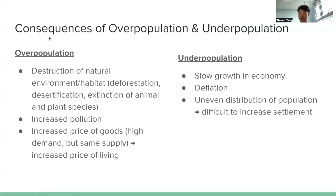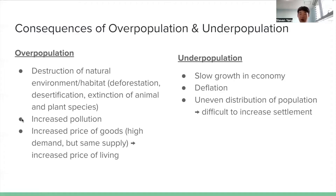Both having too high or too low a population have repercussions. The consequences of overpopulation include destruction of the natural environment and habitat of wildlife, along with increased pollution. The price of goods will increase due to higher demand for the same supply, leading to an increased cost of living, and not everyone can afford that, creating social problems. The consequences of underpopulation include a lack of economic growth, deflation, and uneven distribution of population that creates difficulty in developing settlement areas — you might end up living in the middle of nowhere.